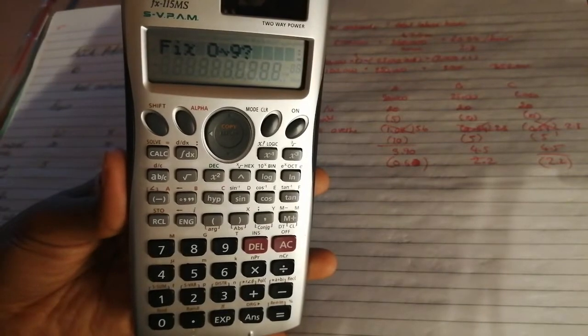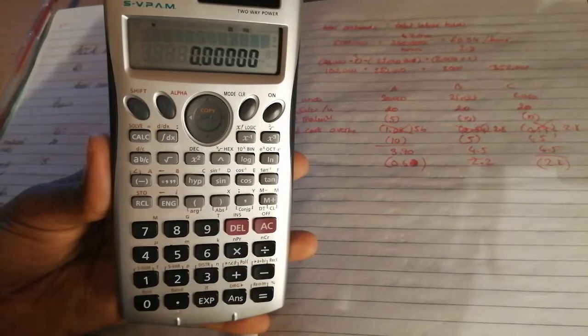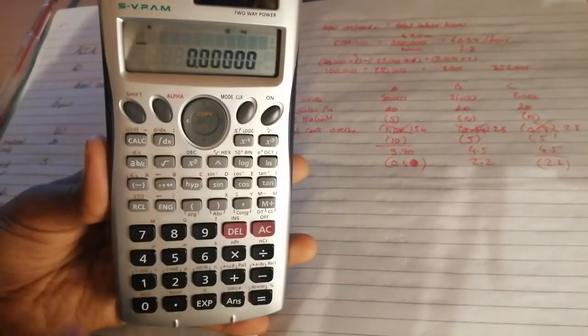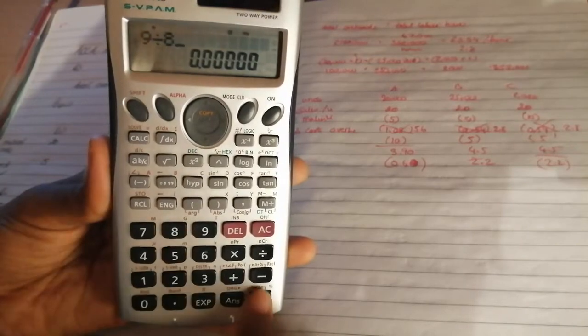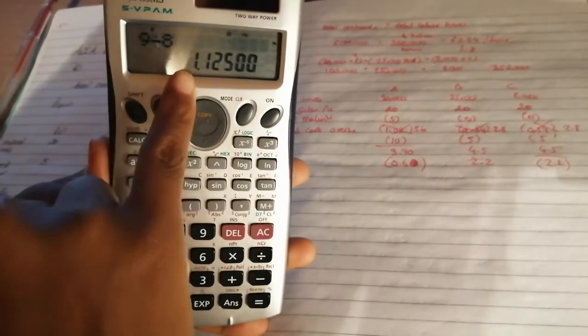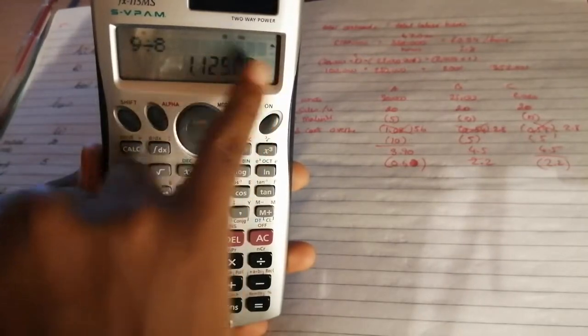But say if you want five because you're doing quite in-depth calculations, just press five. Then you have five decimals. So nine divided by eight, see at 1.12500, it still gives you the full five.